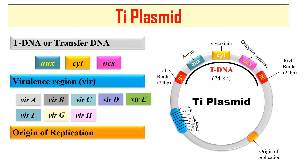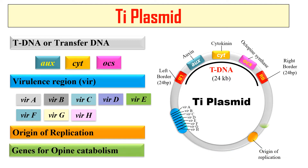The next element of this Ti Plasmid is the origin of replication, which is required for the replication of this Ti Plasmid so that it can make many copies of itself and ultimately cause the disease. The last element is genes for opine catabolism. Since the Ti Plasmid has genes for octopine synthetase, when octopines or nopalines — which are a group of opines — are formed, there must be something to degrade and metabolize them. So the Ti Plasmid also has opine catabolism genes required for the breakdown of these opine compounds.